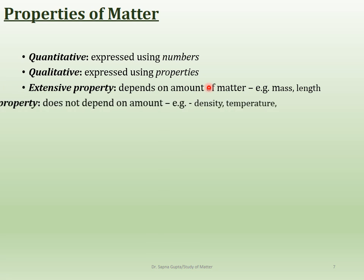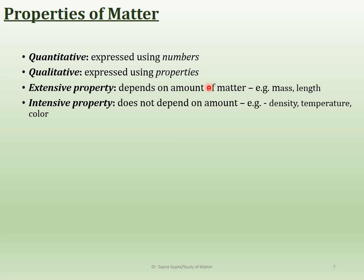There are also two more properties: extensive and intensive. An extensive property depends on the amount of matter — for example, mass and length both increase if you have more substance. An intensive property does not depend on the amount of substance — for example, the density of water is the same whether you have one gram or one kilogram. Color is also an intensive property.